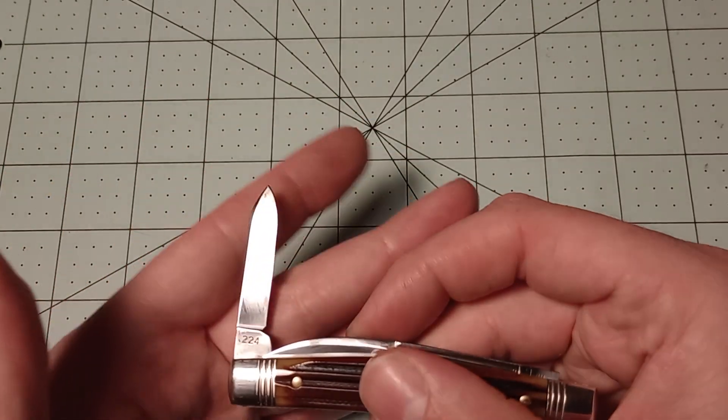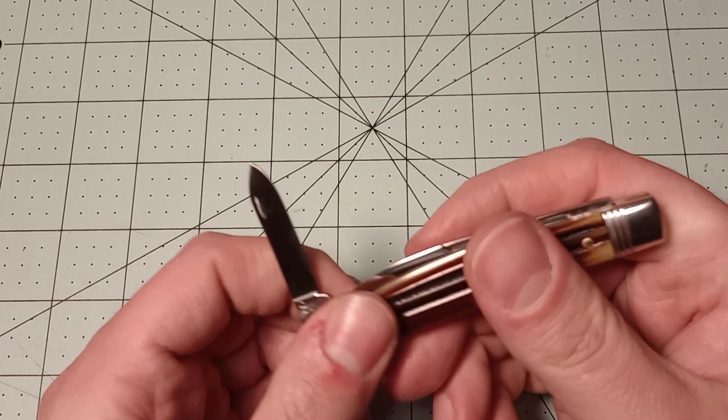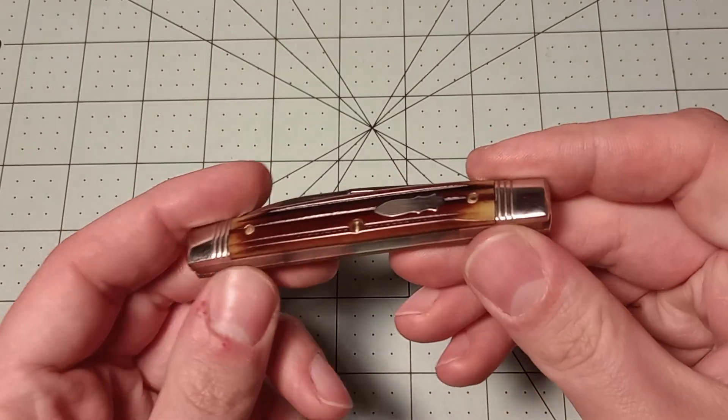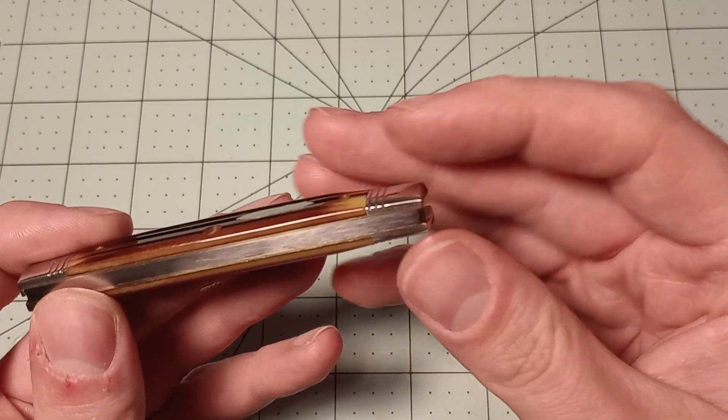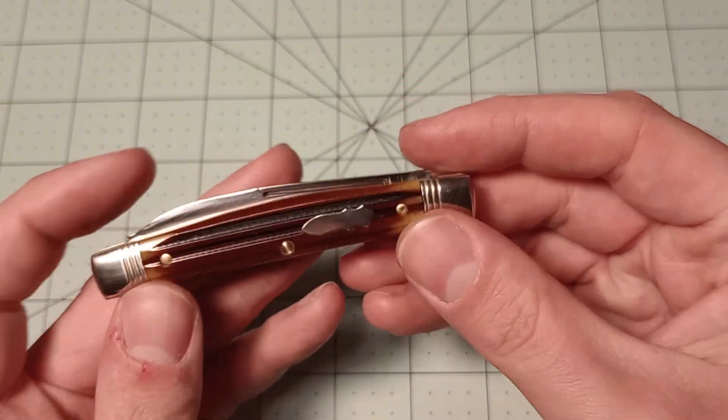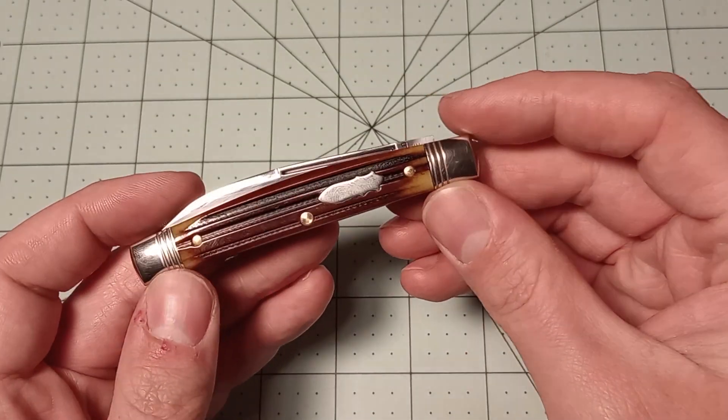But that could also be why it's an S. I don't know. I'm not sure why this is an S. My best guess is these gaps between the bolster and the cover material. That's my best guess. Other than that, I don't really know.